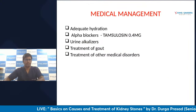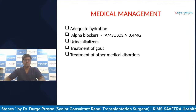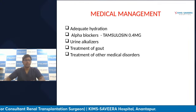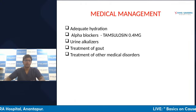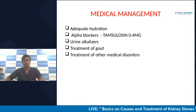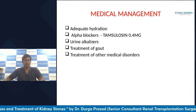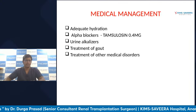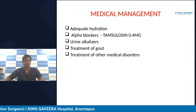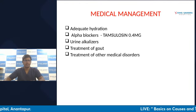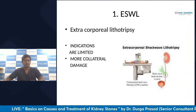For medical management of small stones, the most important thing is adequate hydration — a minimum of three to four liters of water daily. Alpha blockers like tamsulosin are the drugs of choice — one tablet every night — which help the stone pass smoothly. Medical management should only be tried for 10 to 14 days maximum. Urine alkalizers are syrups that decrease burning during urination. For conditions like gout, a simple tablet to decrease uric acid levels helps prevent stone formation.